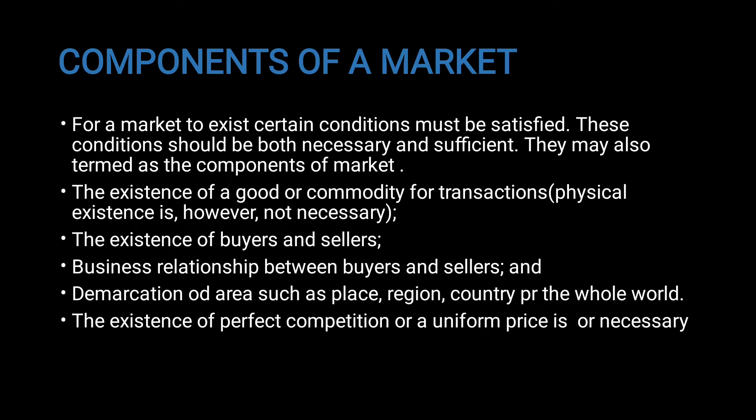The components of a market: for a market to exist, certain conditions must be satisfied. These conditions should be both necessary and sufficient, and may also be termed as components of a market. These include the existence of a group and a commodity for transactions — physical extension is not necessary — but the existence of buyers and sellers is necessary, along with business places where buyers and sellers interact.